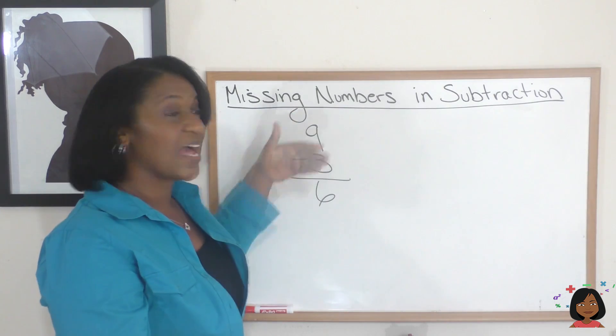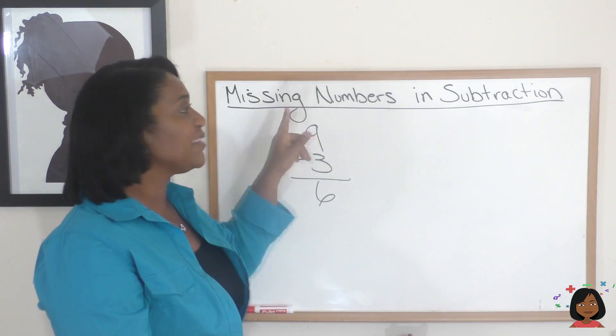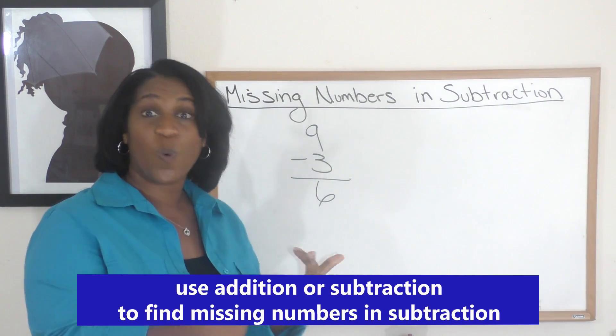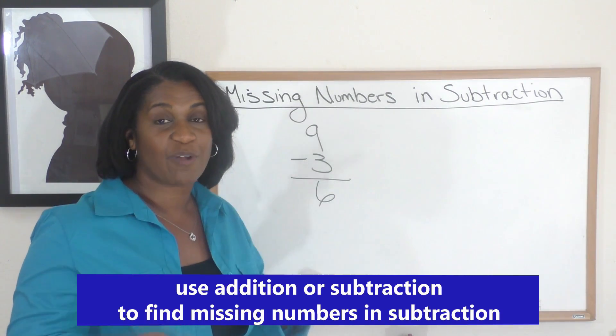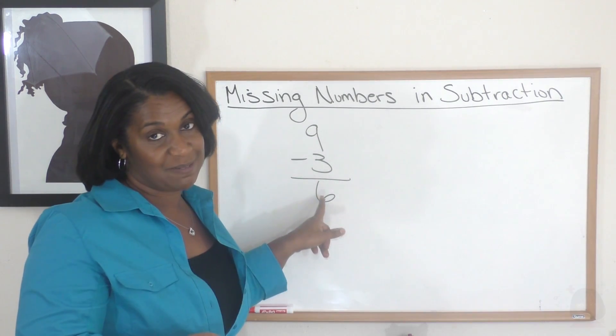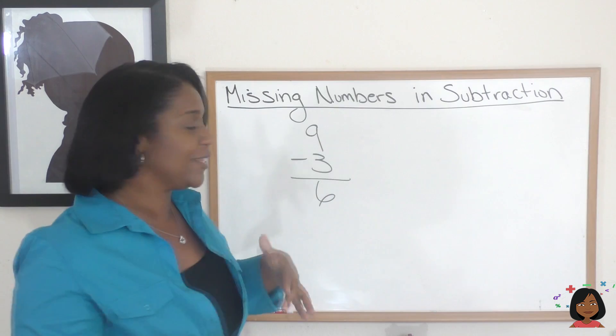So in this instance, I would use addition. So to find the missing numbers in subtraction, we can either use subtraction or addition. It just depends on which number you're trying to find. Are you trying to find the minuend or the subtrahend? So let's give you a little bit more complex example.